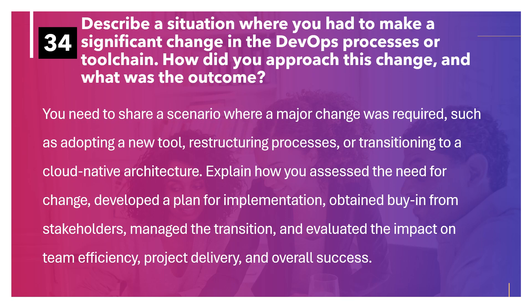Describe a situation where you had to make a significant change in the DevOps processes or toolchain. How did you approach this change and what was the outcome? You need to share a scenario where a major change was required such as adopting a new tool, restructuring processes or transitioning to a cloud native architecture. Explain how you assessed the need for change, developed an implementation plan, obtained stakeholder buy-in, managed the transition, and evaluated the impact on team efficiency, project delivery and overall success.